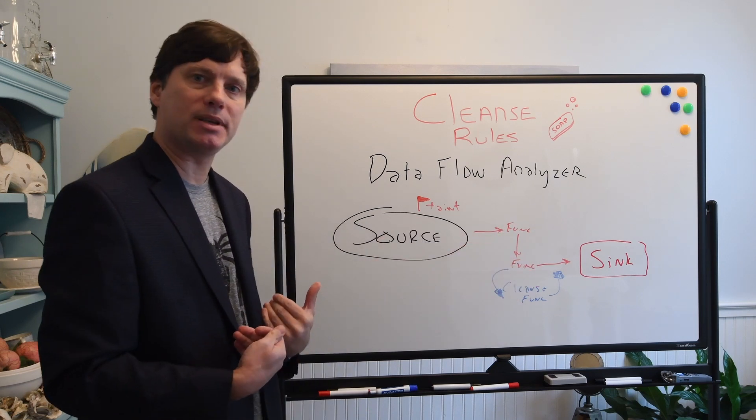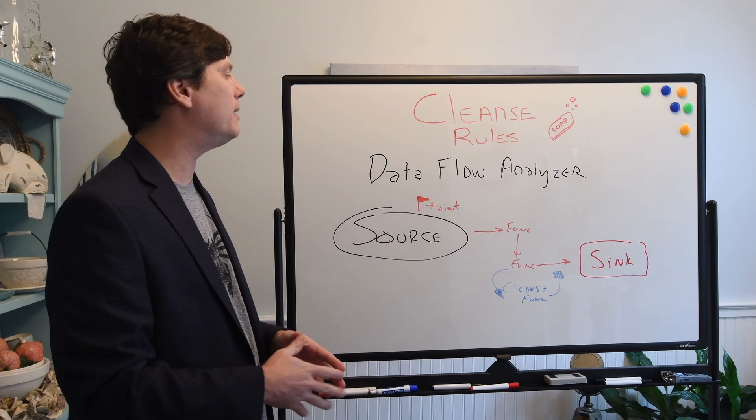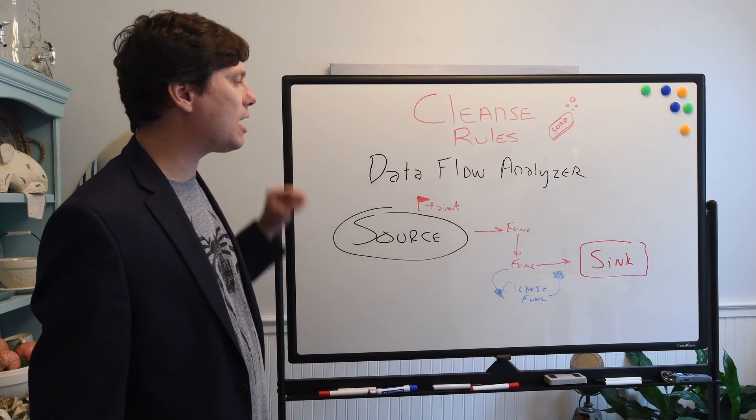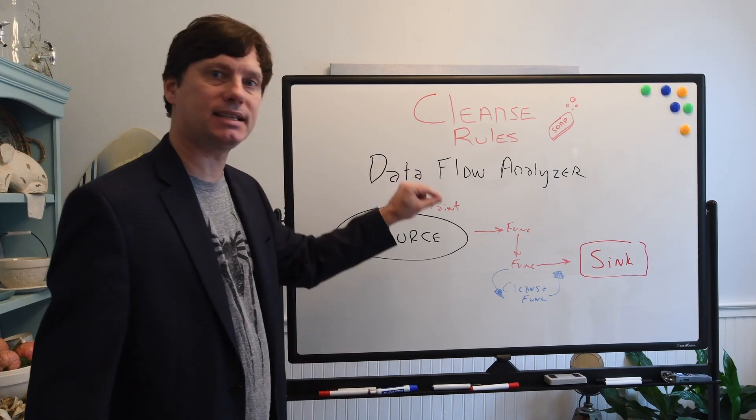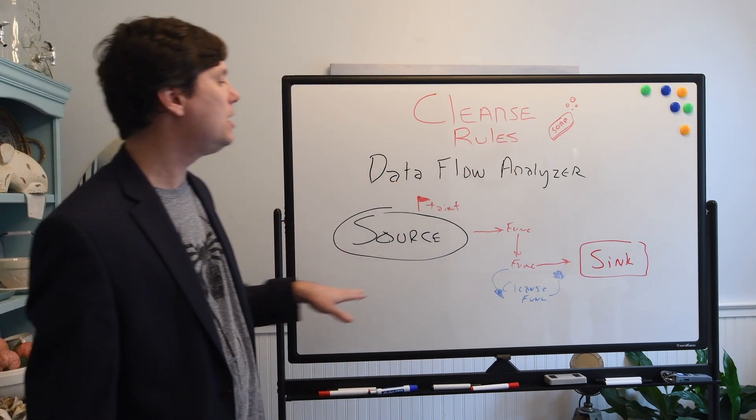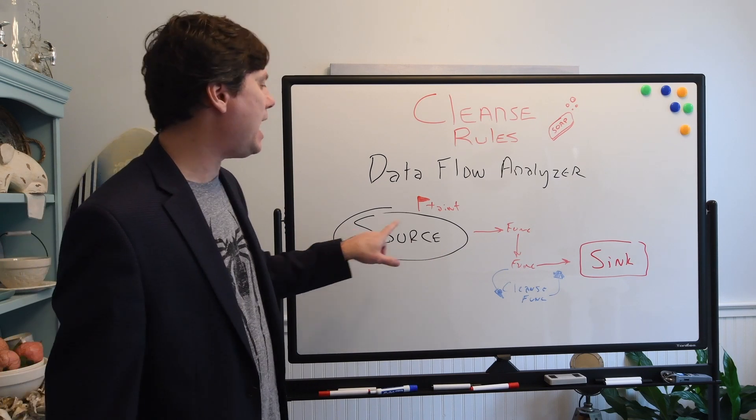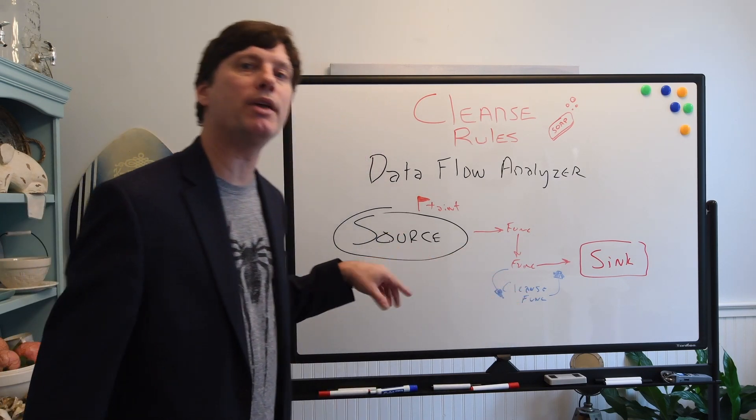Therefore, instead of like the audit template where we set up certain rules and logic to suppress vulnerabilities, this is actually pre-scan. The audit template is post-scan. After we get our results back from the scan, we can filter those and suppress the ones that meet the criteria. The cleanse rules are pre-scan. So we tell the data flow analyzer before it runs the scan which cleanse functions we have that are valid and which cleanse functions work with which categories.